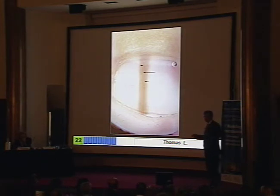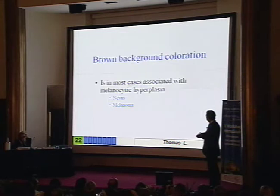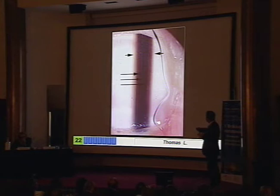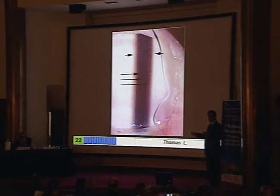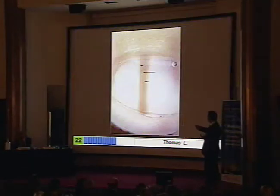The color is not important — this was a very fair nevus, and this was a very dark nevus. What is important is that the lines are regular in their thickness, in their spacing, and in their coloration. The color depends on the skin color of the patient. This is a nail nevus of a dark-skinned patient, and this was a nevus in a light-skinned patient.